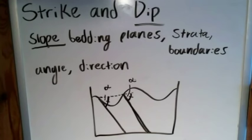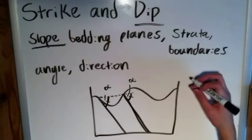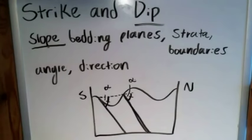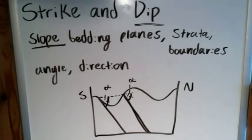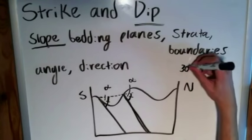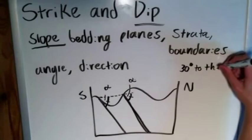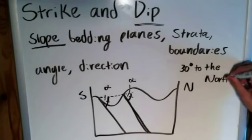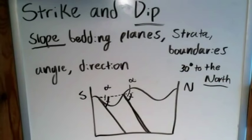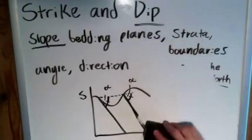Since this is a two-dimensional cross-sectional diagram, you most likely won't be given an exact direction, maybe just north and south or east and west. Since it's generally dipping towards the north, we could say 30 degrees to the north or something to that effect. That's the trickiest dip should get. Now on to our second component: strike.